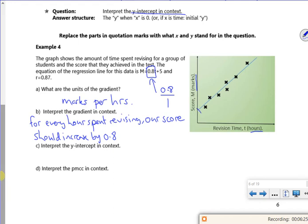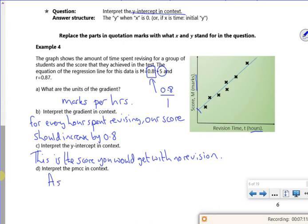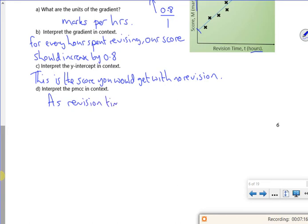So the y-intercept, which is 5, we're kind of saying that's the score you'd get if you didn't do any revision. So this is the score you'd get if you didn't do any revision. It says interpret the PMCC in context. So we're looking at the correlation now, but I don't remember what PMCC means. So as revision time increases, your score also increases. It's a positive correlation, isn't it? There. So that's it on that page.